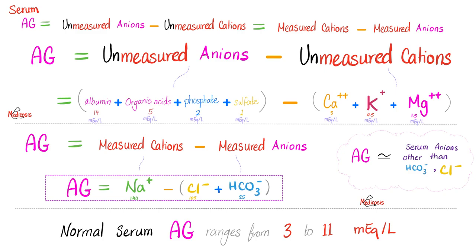Look at this example. The serum anion gap can be calculated two ways. The hard way: unmeasured anions minus unmeasured cations — do the math and the result is about 12. Or the easy way: measured cations minus measured anions, which is sodium minus the sum of chloride and bicarbonate. The result is the same. The anion gap is a gap in our measurement — it represents the unmeasured anions, meaning any anion other than chloride and bicarbonate.